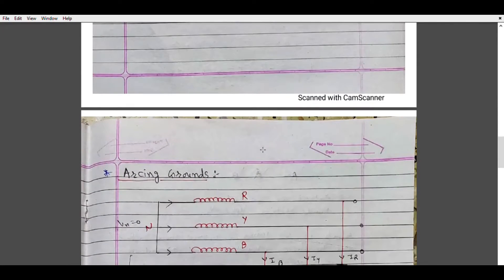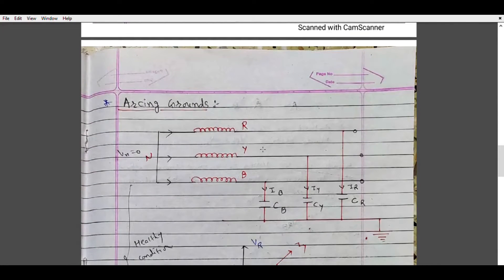Now let's jump into another topic which is arcing ground. Arcing ground is one of the causes of high voltage surge in a power system. We can say it is a ground fault on one of the phases of an underground cable in which the neutral is not grounded. Let us consider this simple underground cable system where the three-phase system is R, Y, B and the neutral is N, which is not grounded.